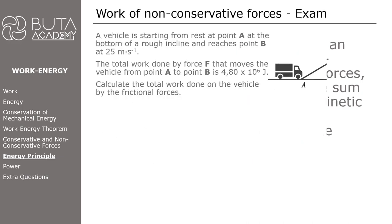Now, let's see this formula in action. A vehicle is starting from rest at point A at the bottom of a rough incline and reaches point B at 25 meters per second. The total work done by force F that moves the vehicle from point A to point B is 4.80 times 10 to the power 6 joules.